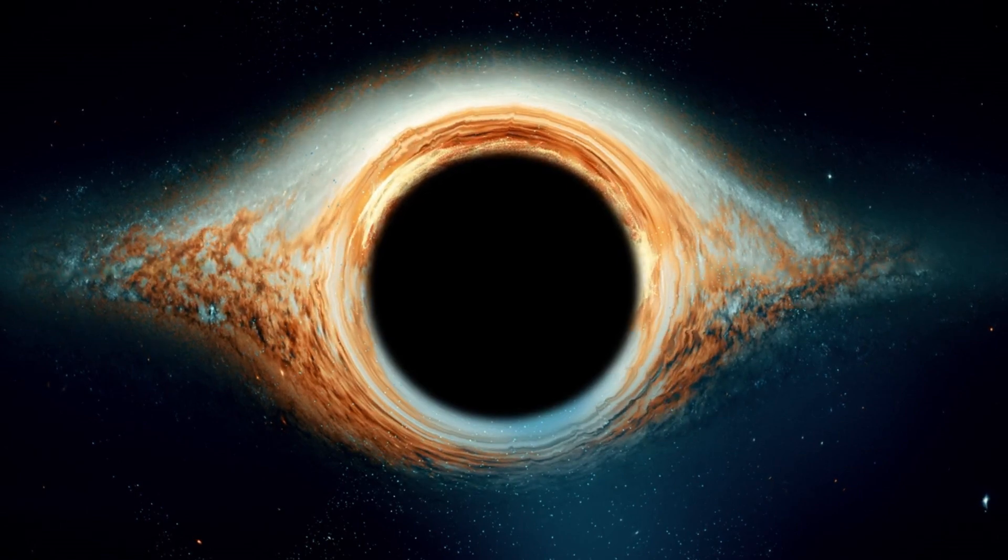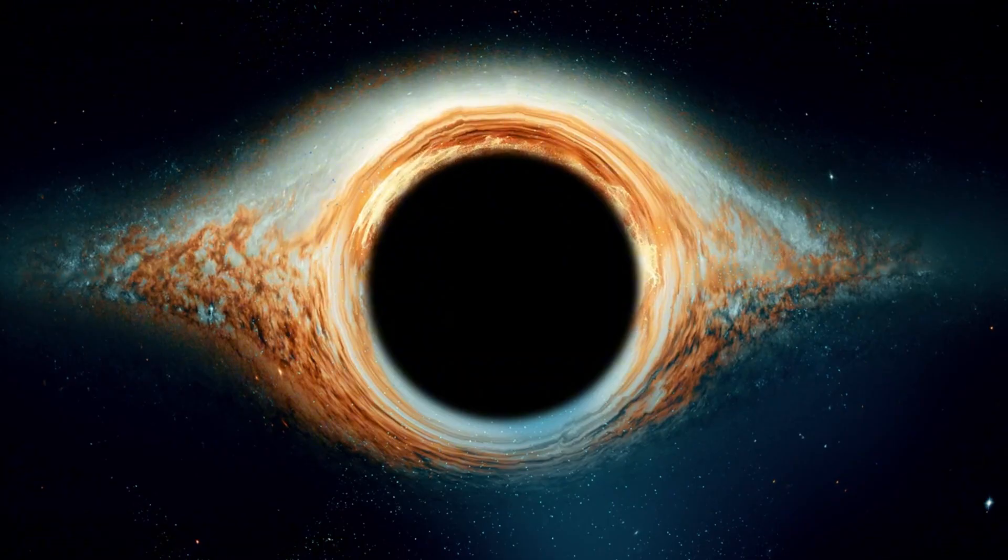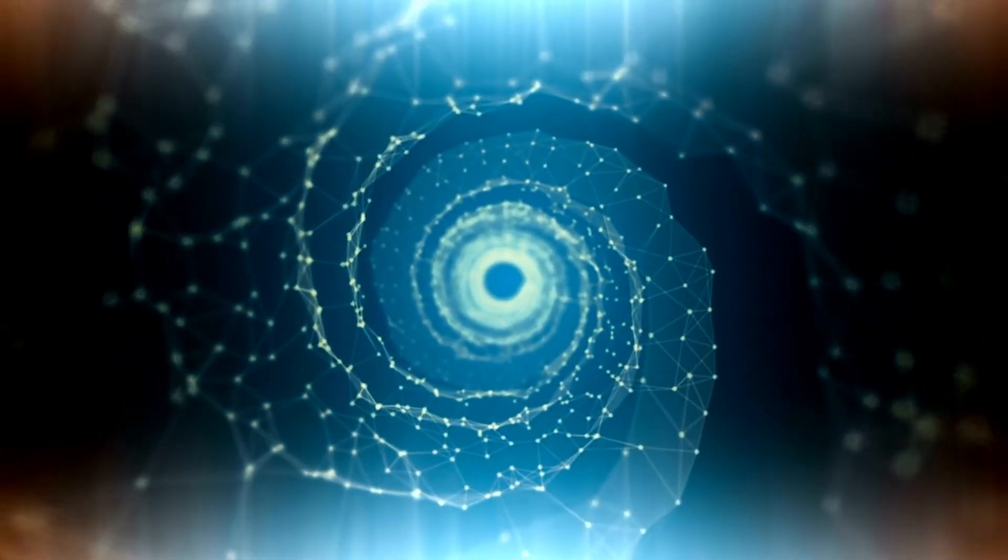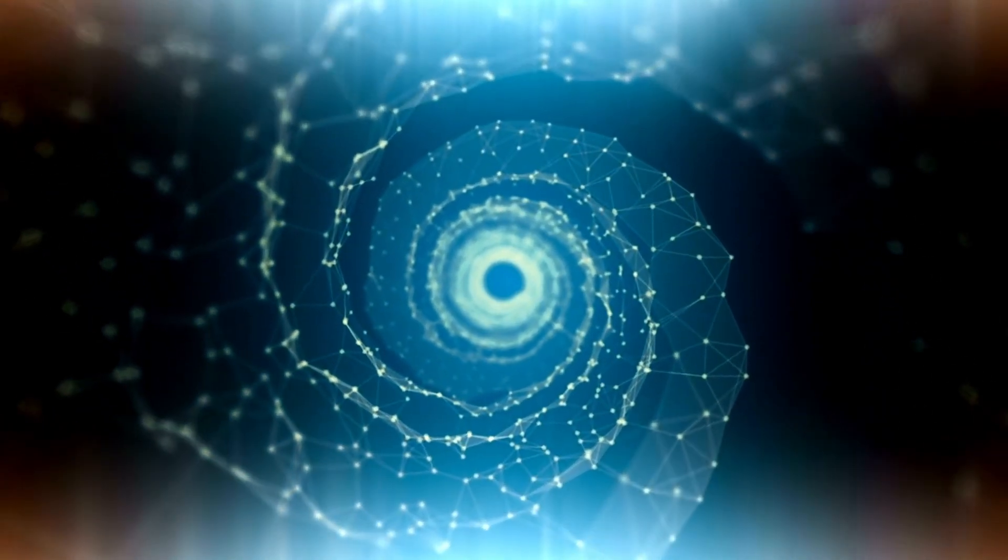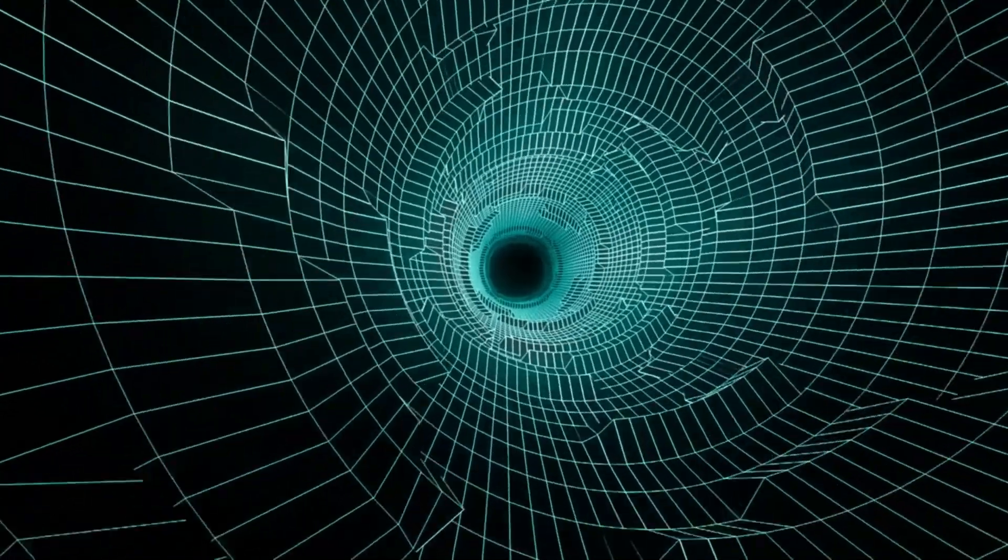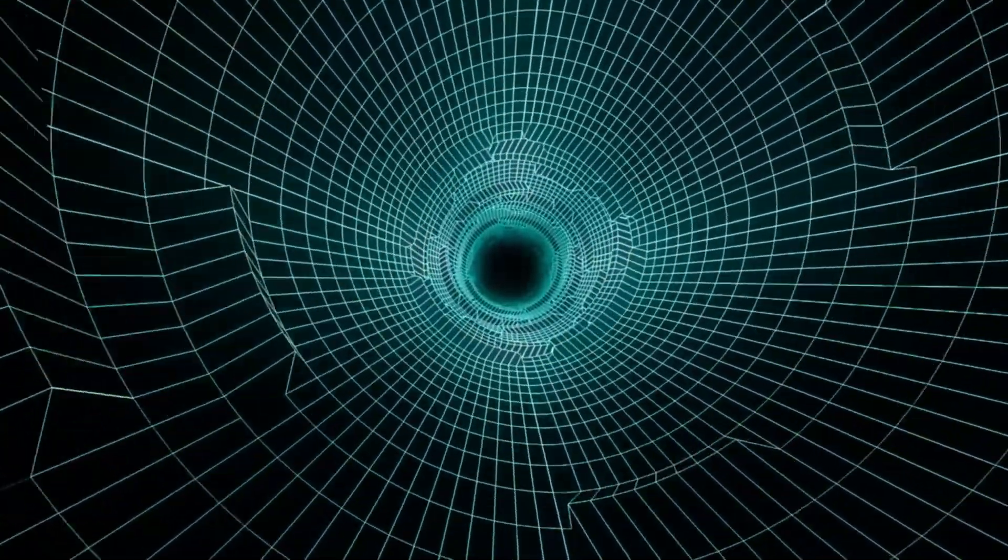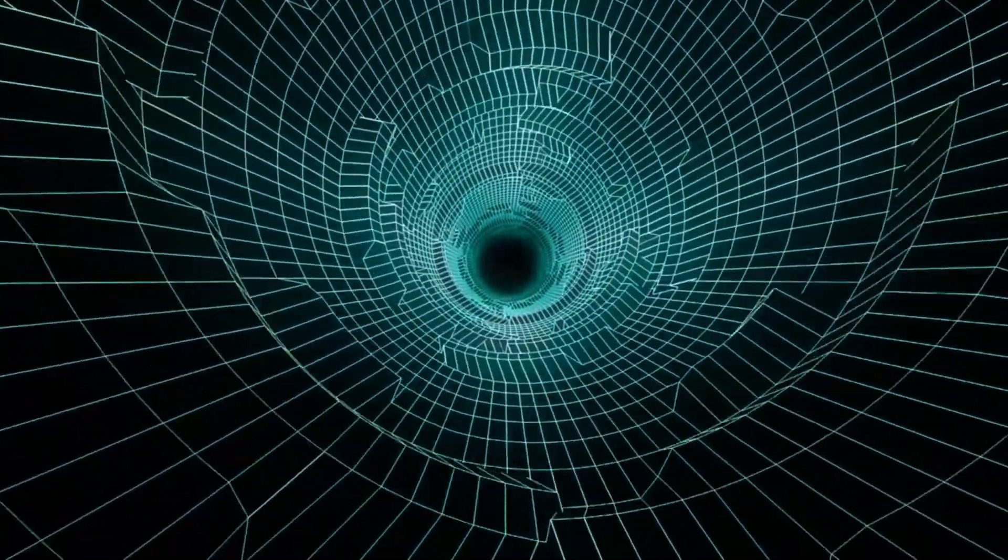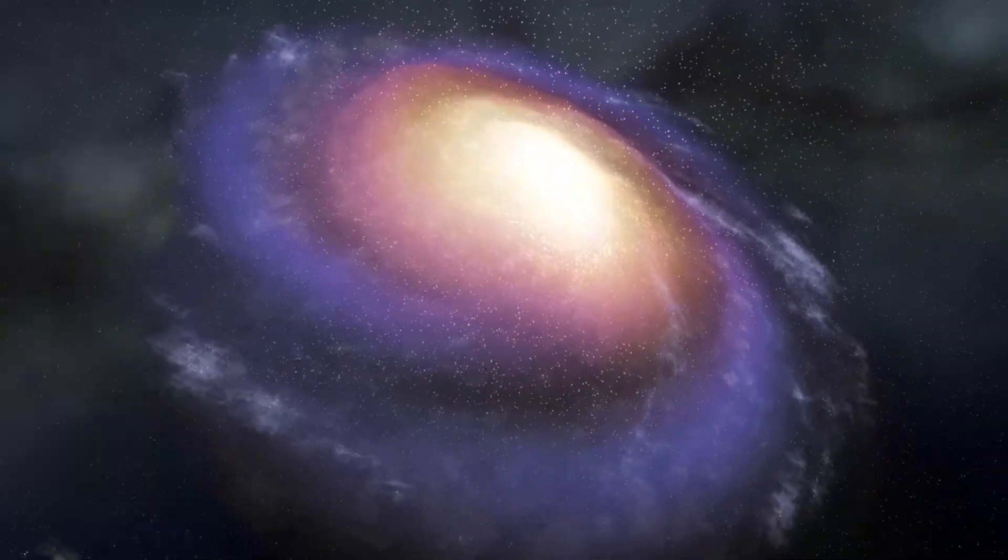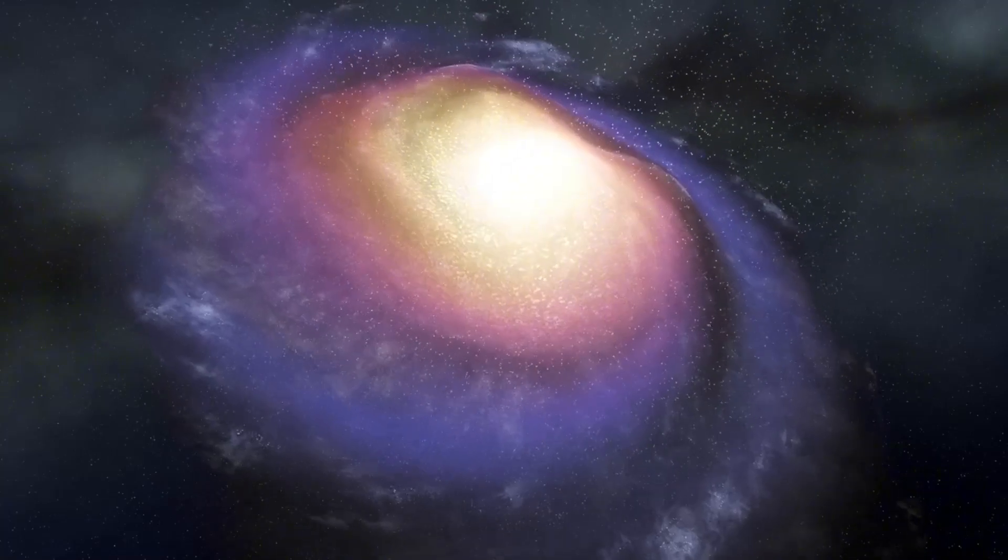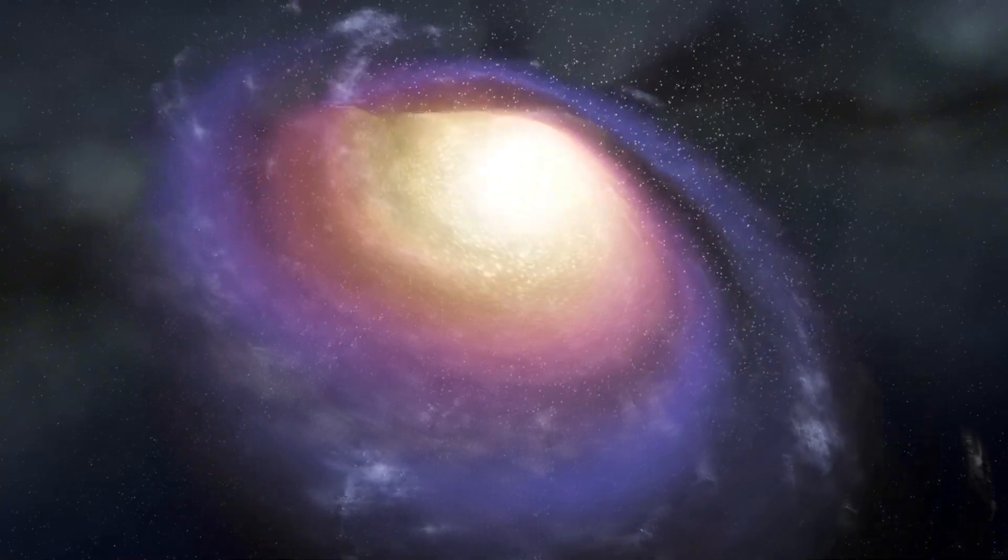For the first time, they managed to capture a clear and detailed photograph of a black hole, specifically the one located at the center of the galaxy Messier 87 M87. This black hole, known for its immense size and power, was photographed over the course of several nights. With each new image, researchers gathered an abundance of data, unveiling more and more details about the black hole's structure and behavior.